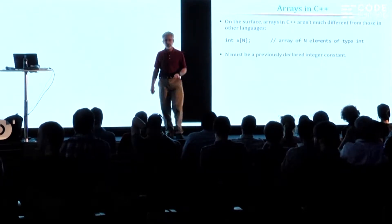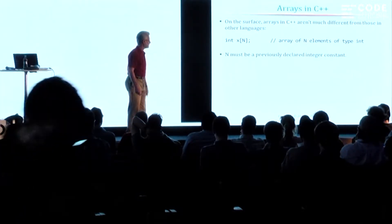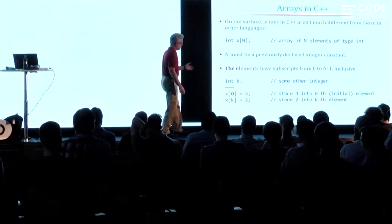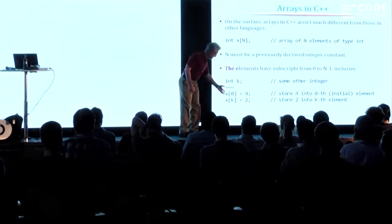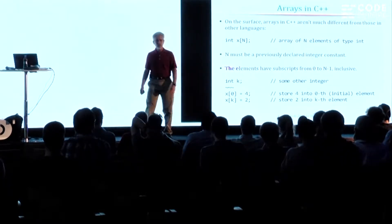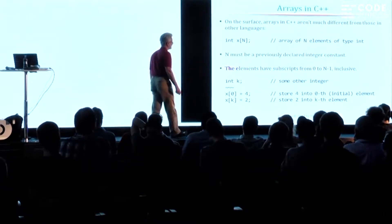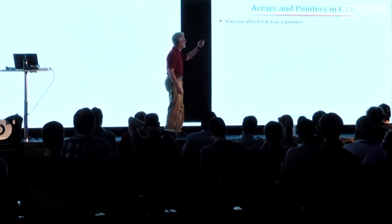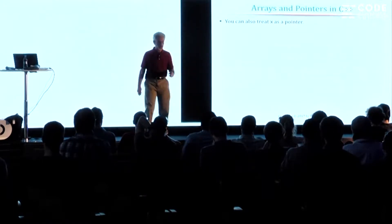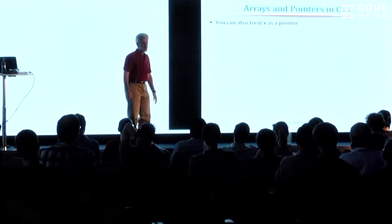So there's your basic array declaration. It says that X is an array with N elements of type integer, where N is some previously declared integer constant. And the uses are unsurprising — you use the subscript notation in the way that an awful lot of other programming languages use subscripting. But the part that gets interesting is that for some reason you can treat arrays — the name of an array — as if it's a pointer.